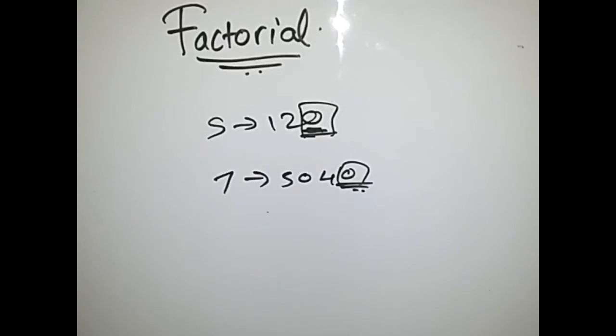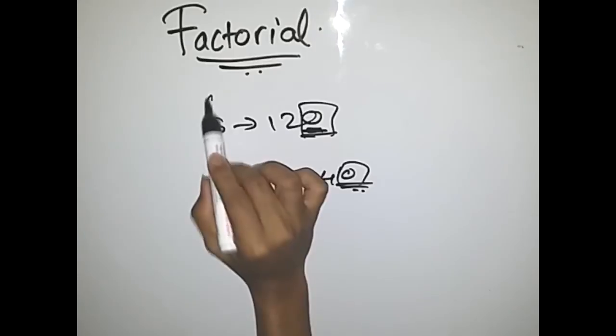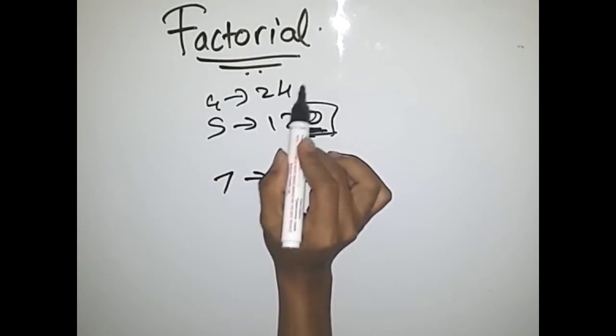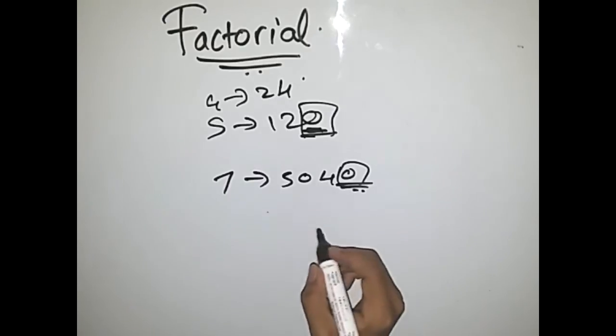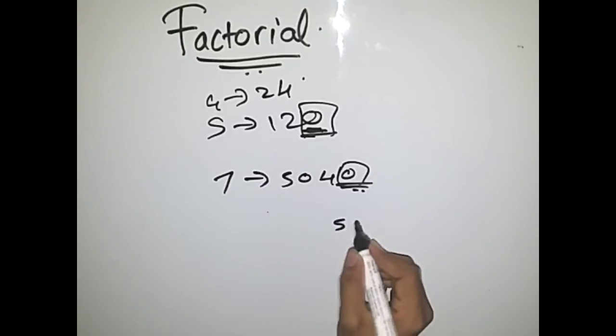Beginners might be confused about how to find how many zeros are at the end of factorials of bigger numbers. Let me tell you a very basic logic. 4 factorial is 24, so there is no zero at the end. 5 factorial is 120. So what's the logic of this problem?